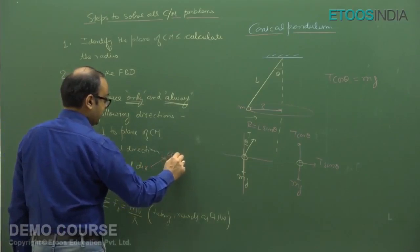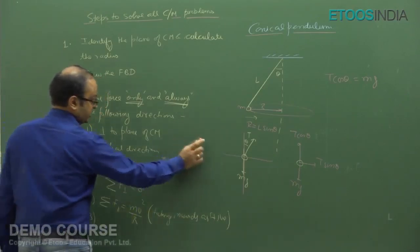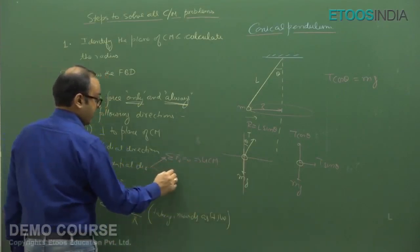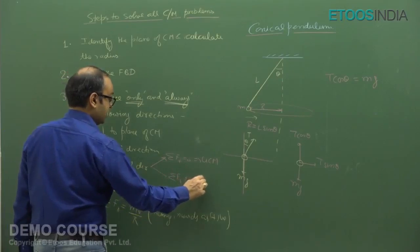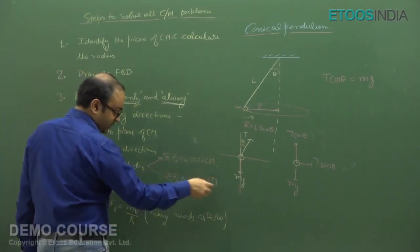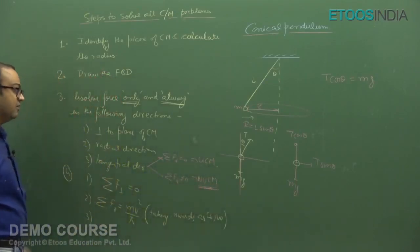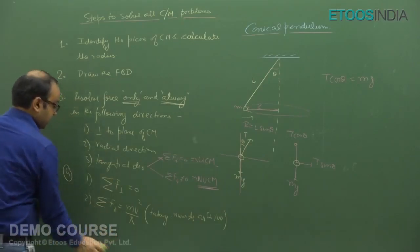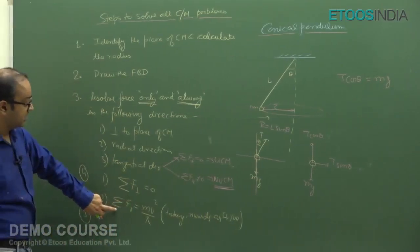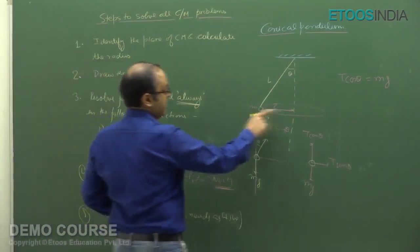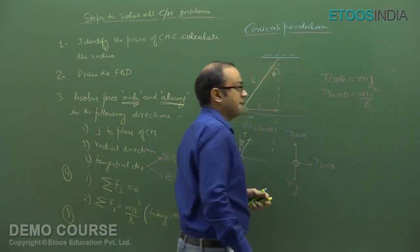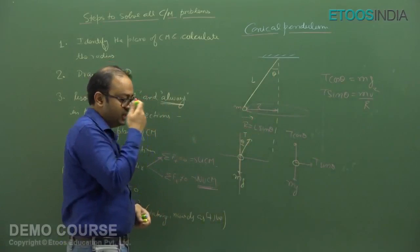The third part of Step 4: if Σ F_tangential = 0, this means uniform circular motion. If Σ F_tangential ≠ 0, this means non-uniform circular motion. In our conical pendulum case, the only radial force is T sin theta, so T sin theta = Mv²/r, and the radius r = L sin theta.